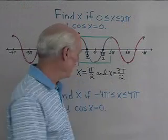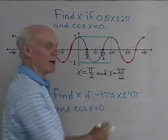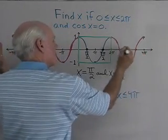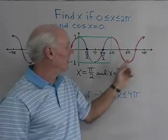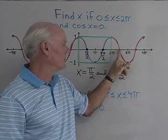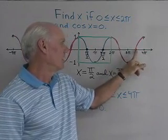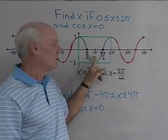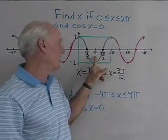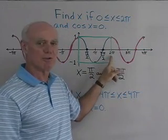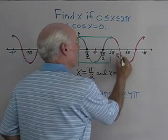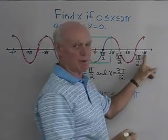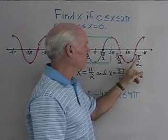Now let's extend this and find all zeros between negative four pi and positive four pi — everywhere this graph crosses the x-axis. Going along the positive x-axis: pi over two, then three pi over two, then five pi over two, then seven pi over two, then continuing — five pi over two at the next cycle and seven pi over two. Counting out: one pi over two, two pi over two (which is pi), three pi over two, four pi over two, five pi over two, six pi over two, seven pi over two, eight pi over two. So I get additional zeros at five pi over two and seven pi over two.